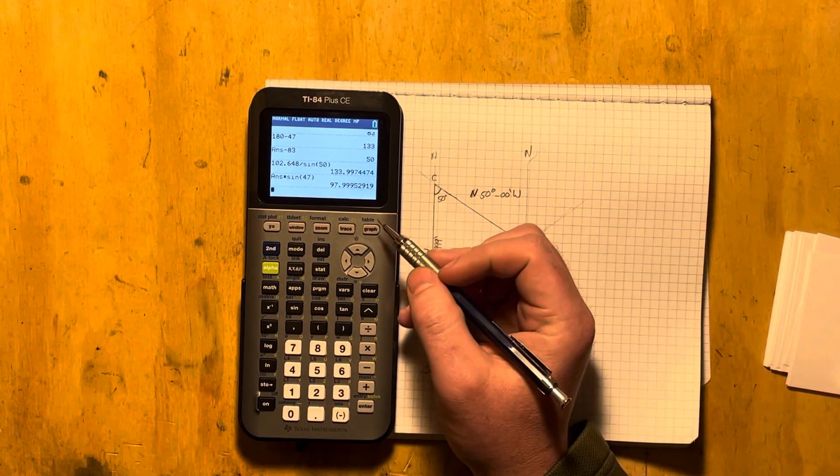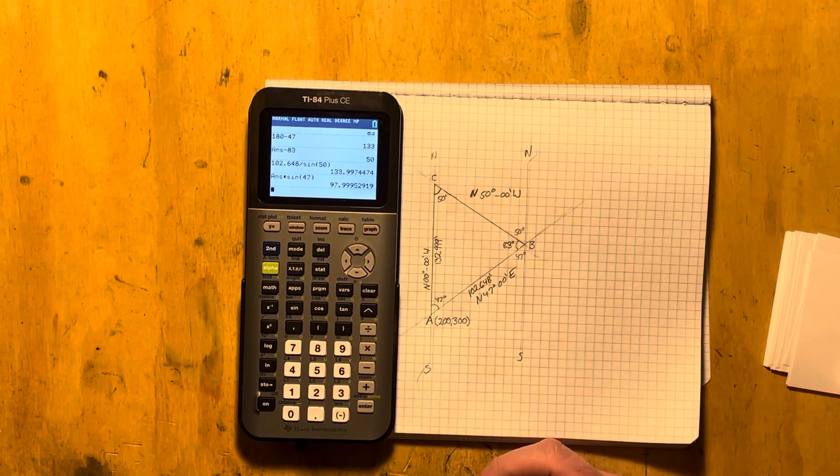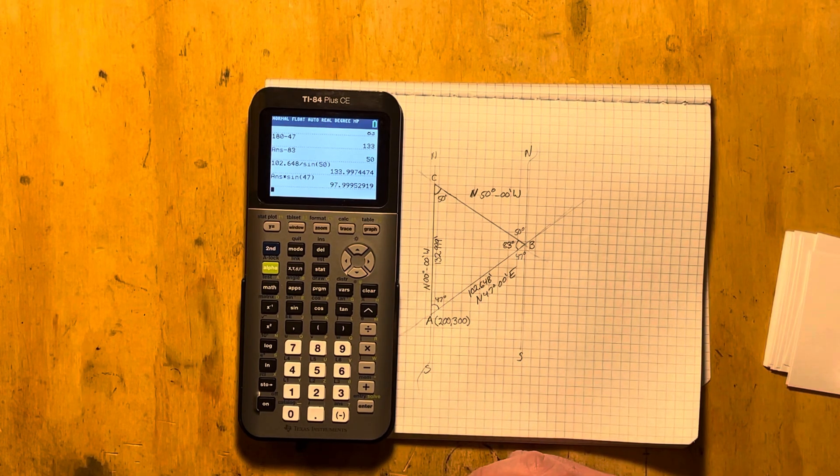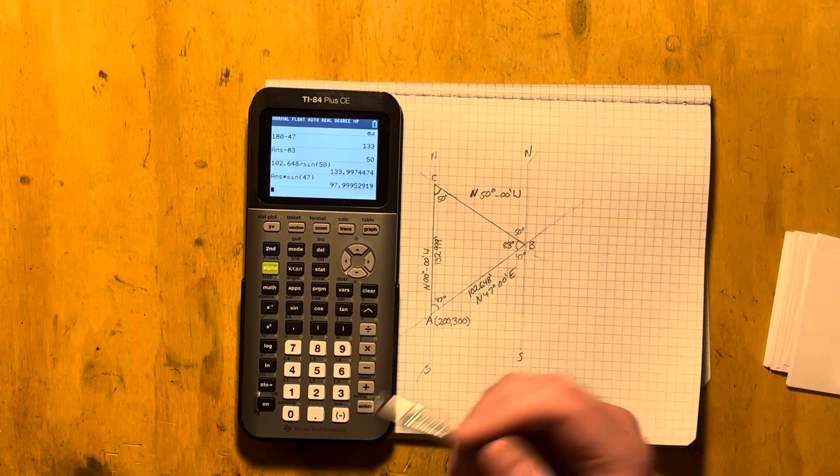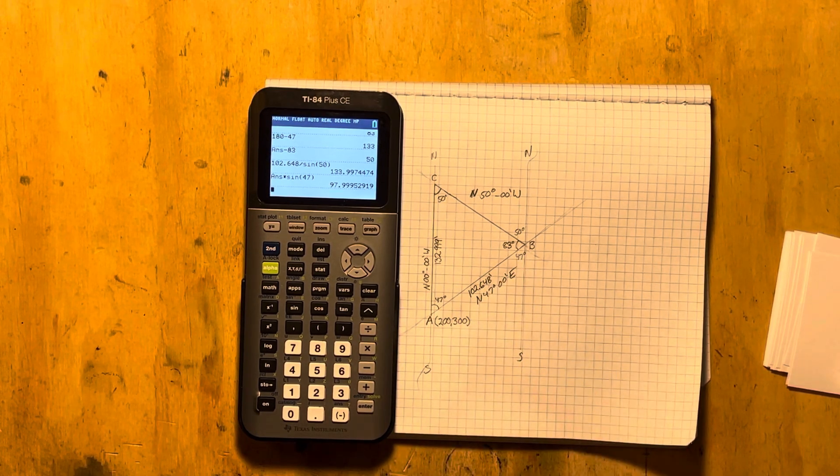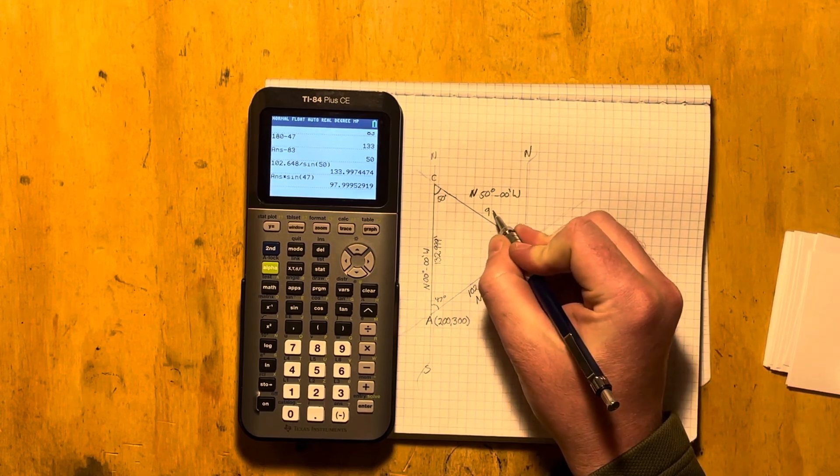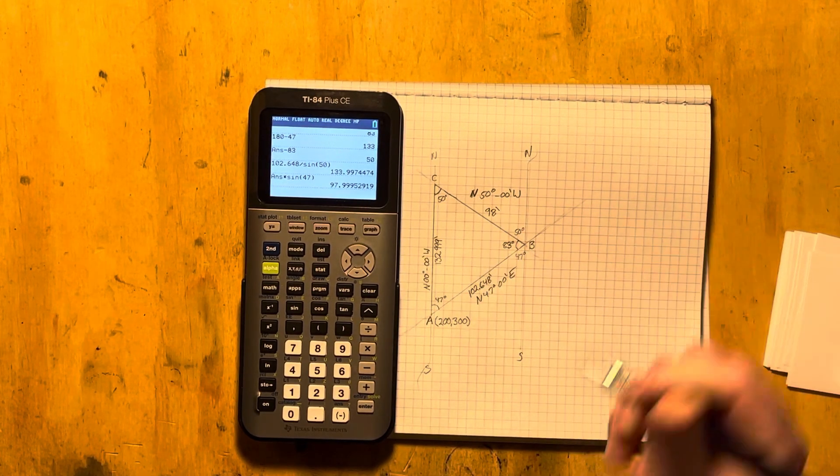And we get 97.9995. Since I've been working with three decimal places, that's going to round up and it's going to carry through. So 98 feet is the length.